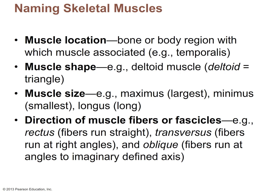Another way muscles are named is by the direction of muscle fiber or fascicle attachment. For example, rectus muscles have fibers that run straight — such as the rectus abdominis, your six-pack. Transversus muscles represent fibers that run at right angles, such as the transversus abdominis. These are muscles that have fibers running diagonally.